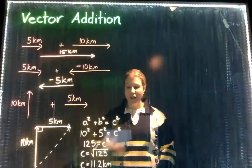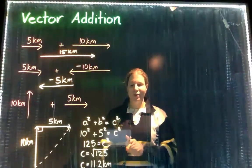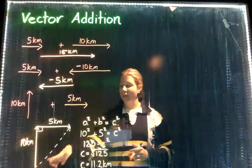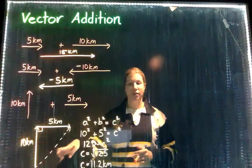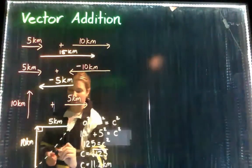So hopefully this is reminding you of your year 9 maths, and we have found that the length of this, or the magnitude of this resultant vector, is 11.2 kilometers.